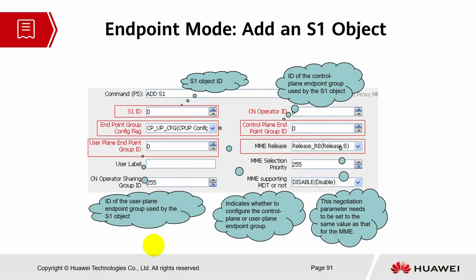Let's look into the interface endpoint mode — adding an S1 object. The command changes but the information is the same: you need to add the S1 CN operator ID. Besides that, you need to bind the endpoint group of the control plane and user plane. That is the only difference compared to link mode.